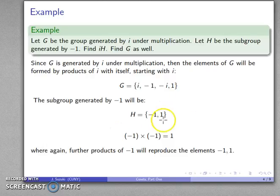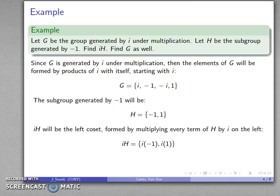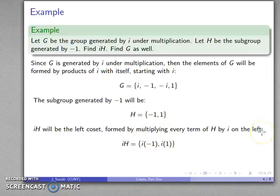So I have my group G and my subgroup H, and I can form cosets by multiplying the subgroup by any element of the group. So IH, the left coset, is formed by multiplying every element of H by i on the left. That's i times -1 and i times 1. Those simplify to -i and i.